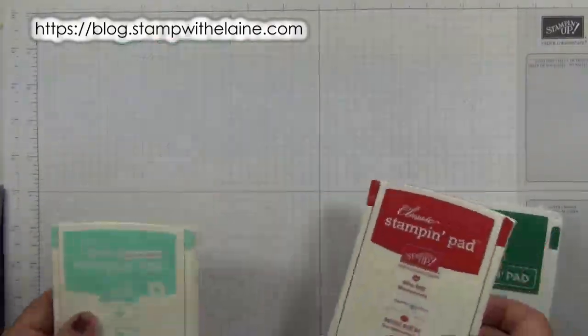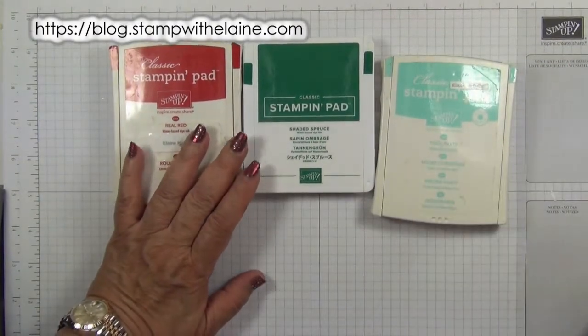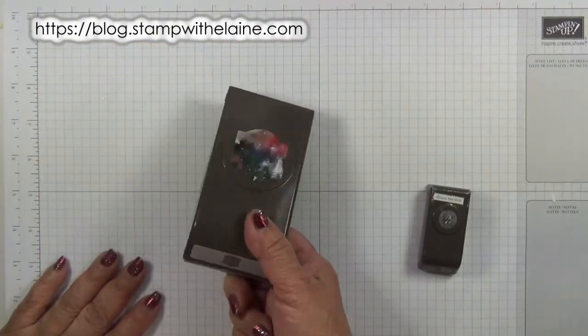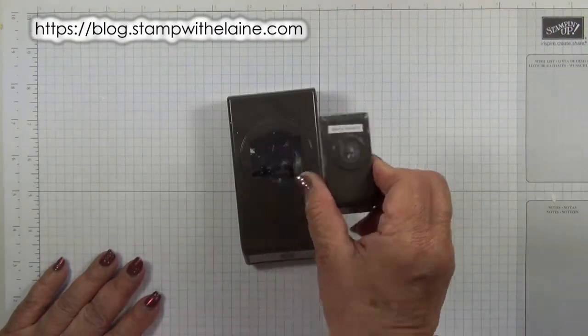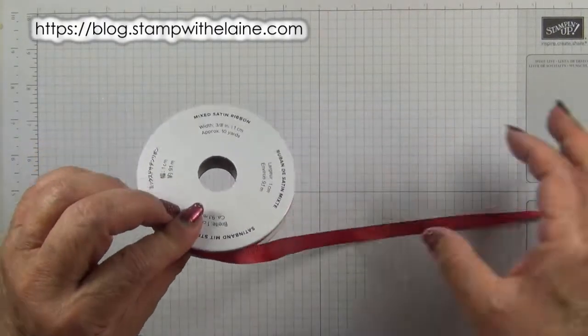The inks I'm using are Real Red, Shaded Spruce, Pool Party, and a Shaded Spruce marker. We need a Christmas Traditions punch and the half inch circle punch, and Real Red mixed satin ribbon.